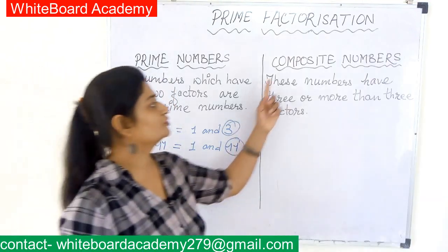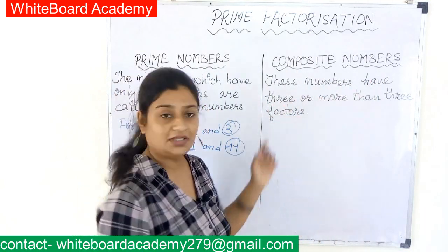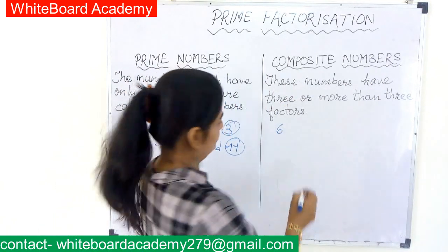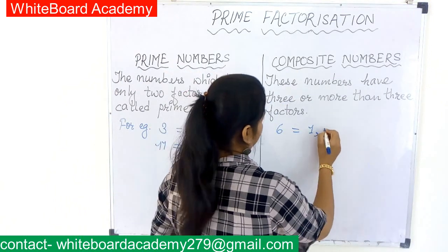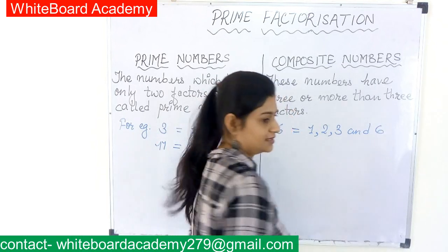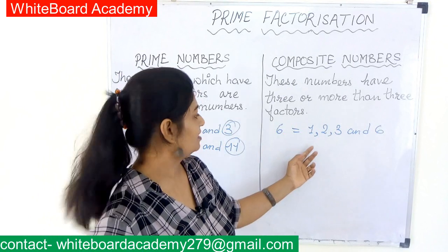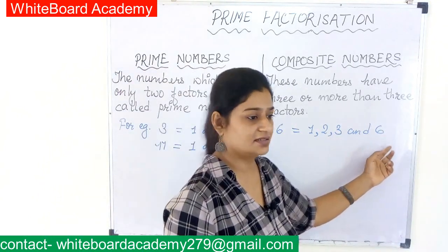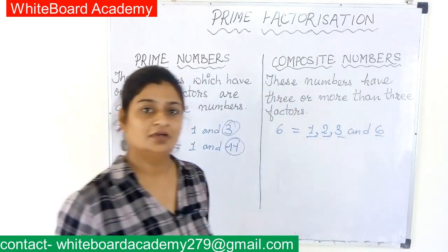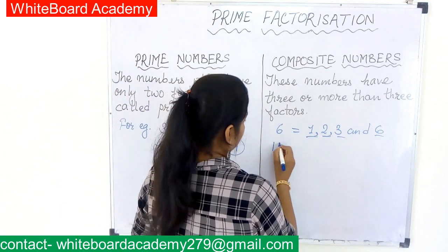Now let's move to composite numbers. These numbers have 3 or more than 3 factors. Let's take one example: 6. The factors of 6 are 1, 2, 3, and 6. So 6 can be divided exactly without leaving a remainder by 1, 2, 3, and 6. Altogether it has 4 factors, so it is a composite number.